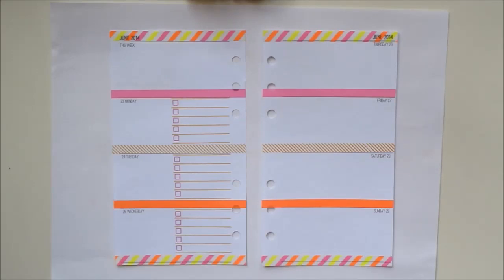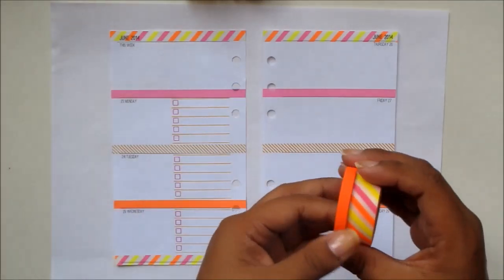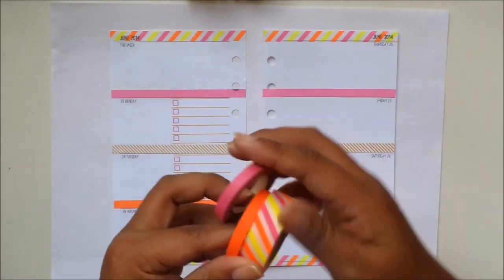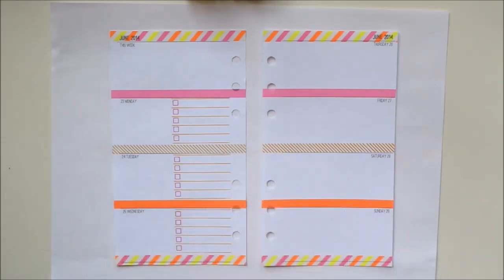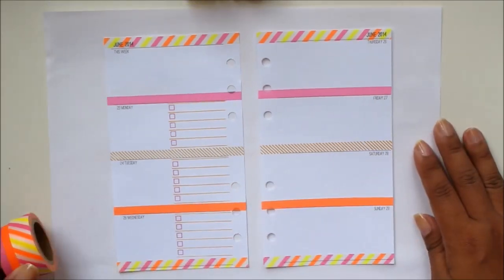I pretty much did the same theme which is this pink and orange theme, really bright neon colors. Some of the items that I changed with this decoration was I use more of the Studio L2E stamp sets.